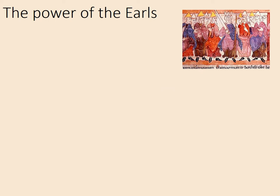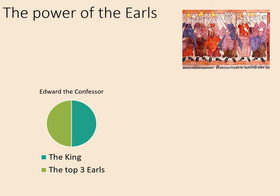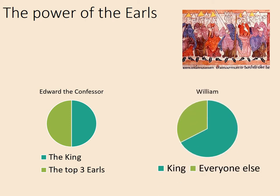We also need to consider the power of the earls. The earls were a system created by King Cnut and continued by Edward the Confessor. William decided to keep the earls as a title but changed their role considerably. In Edward the Confessor's time, the king had roughly half the power and the top three earls had the rest — a more even balance. Under William, he had the vast majority of the power, meaning even the most high-ranking nobles had only a fraction of the king's power and influence. Power was far less shared in William's England.